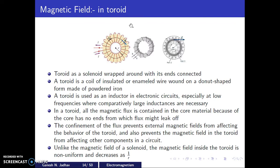The magnetic field effect from outside is very less in case of a toroid. Unlike the solenoid, the magnetic field inside the toroid is non-uniform and decreases as 1/R. At the center it is at its highest value, and it decreases with increasing radius.